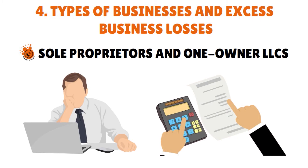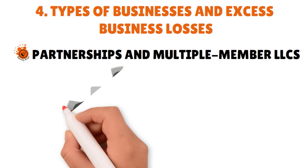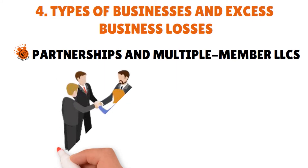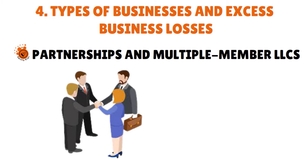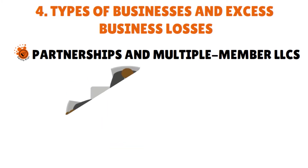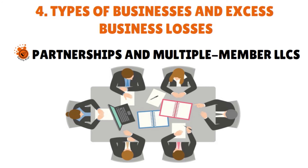The business types that also qualify are partnerships and multiple-member LLCs that calculate business taxes on a partnership tax return — Form 1065 — with income passing through to the individual partners. Form 1065 is more of an FYI tax return to the IRS because the partnership itself does not pay taxes on that return. The IRS receives the Form 1065 to reconcile the amounts indicated on the return with the amounts that all the partners have filed with the IRS individually.